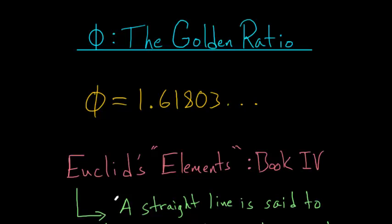The number phi, otherwise known as the Golden Ratio, is an interesting number to study since it shows up in different places in nature, and many different artists and architects use it in their work. As a decimal, phi is equal to 1.61803, and this goes on forever since phi is an irrational number.